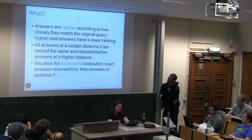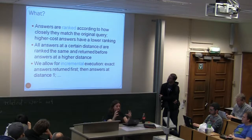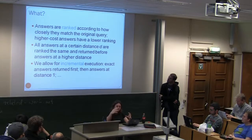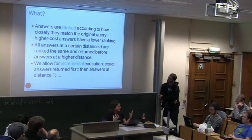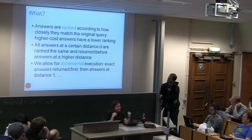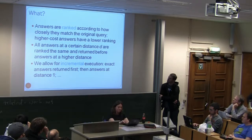Answers are ranked by how closely they match the original query. All exact answers are returned first. Then incrementally, answers at distance one, two, three, etc. are returned. Eventually, with the right type of graph, everything could end up on screen - which would not be very useful at all.